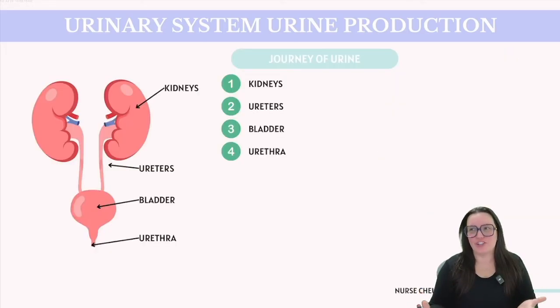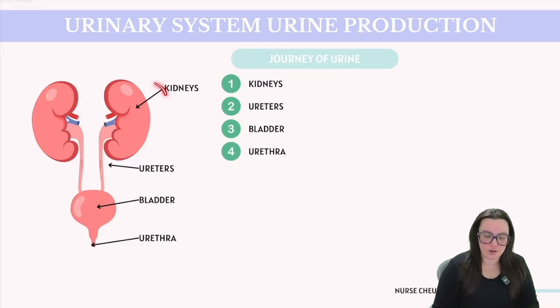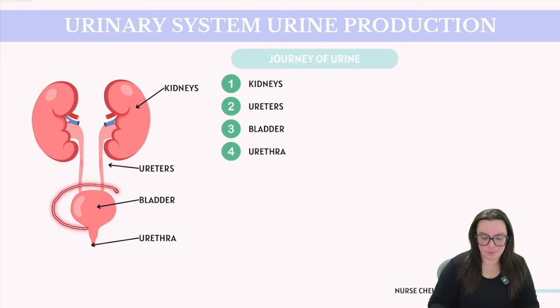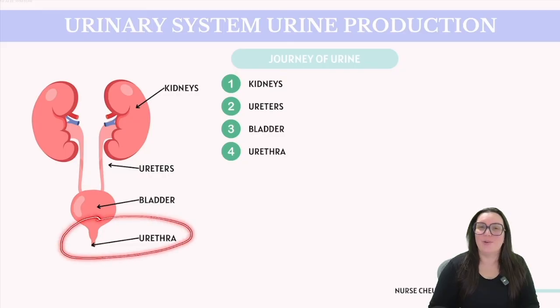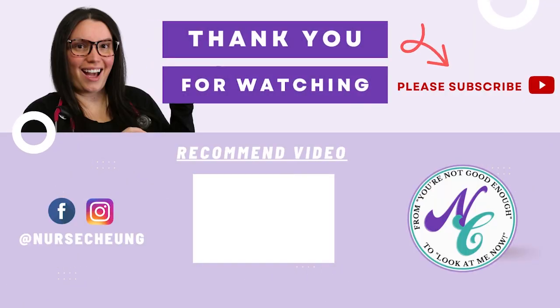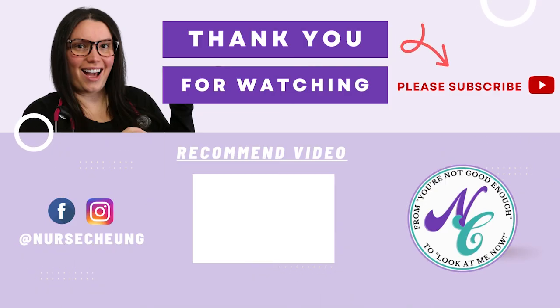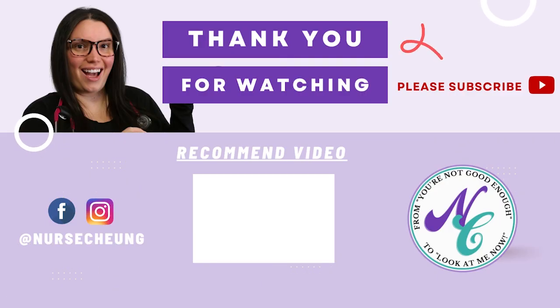As we finish our journey of urine production and expulsion, urine produced by the kidneys moves down into the ureters, is stored in the bladder, and is eventually excreted through the urethra. I hope this information was helpful in understanding the urinary system. If you have any questions, leave them down below. Head over to nursetongestore.com for additional resources to help you ace those ATIT's exams.